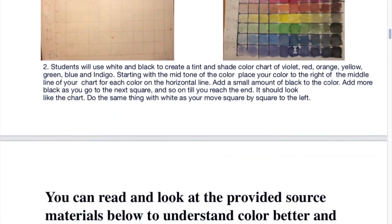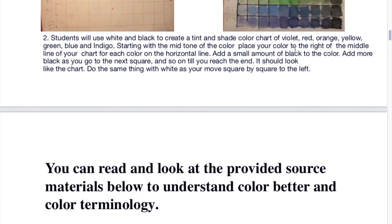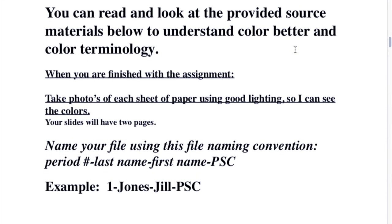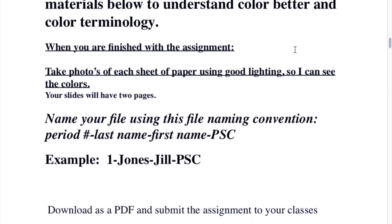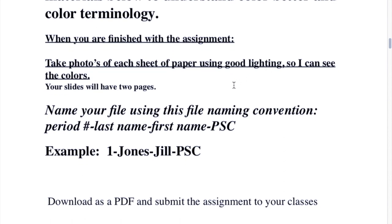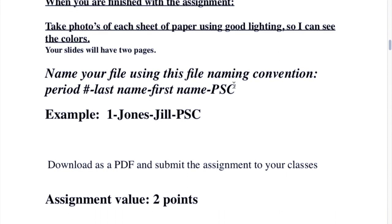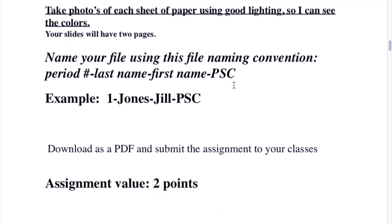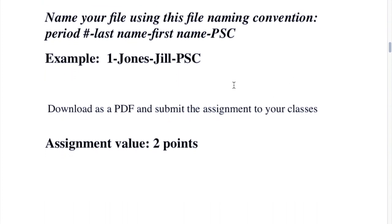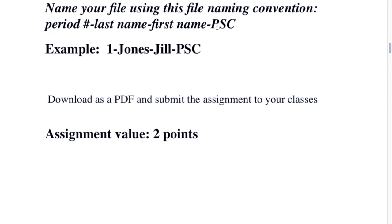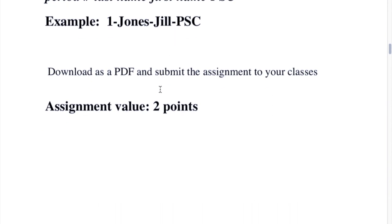So you need to watch the video. After you are done, you are going to have two sheets of paper. You are using your nice white paper and you are going to take a photograph of each one of them with good lighting so that I can actually see. I don't want to see dark stuff. If I see a dark page and I can't see your colors, I am going to send it back to you until you take a better picture. I need to see what it looks like. You are going to name it PSC and it is worth two points.